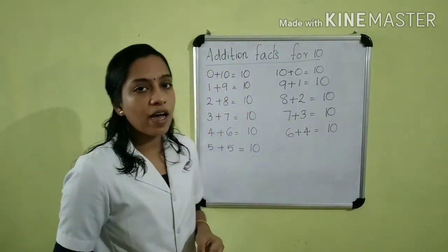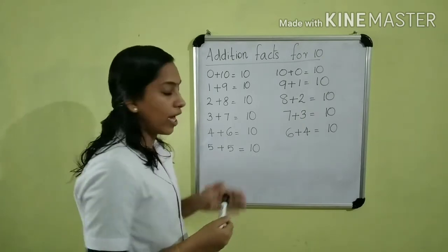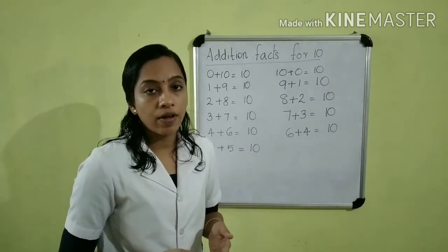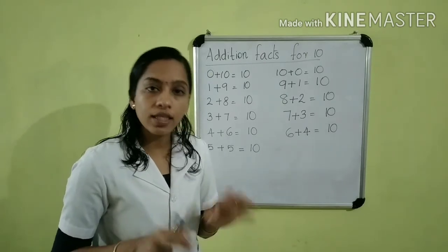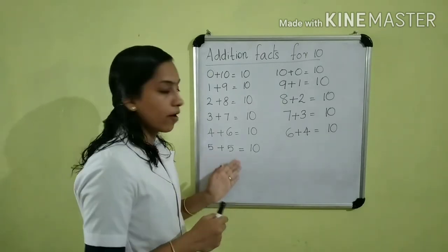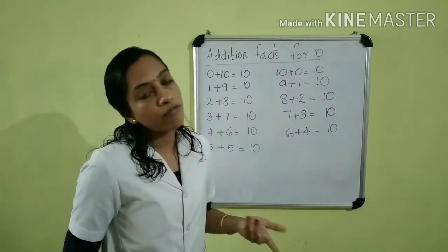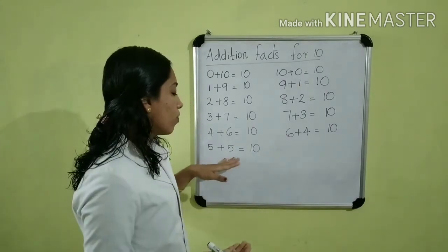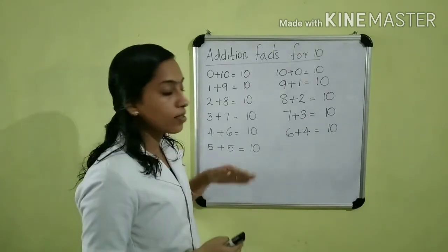Last one: 5 plus 5. Children, if we change the order of 5 and 5, what will happen? Nothing will happen. That is, 5 plus 5. If we change the order of 5 plus 5, again we will get 5 plus 5. So we need not change the order of this last set.